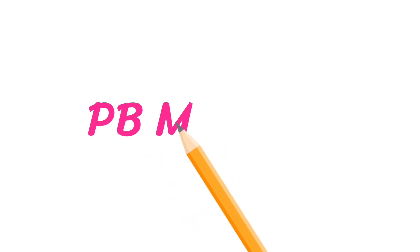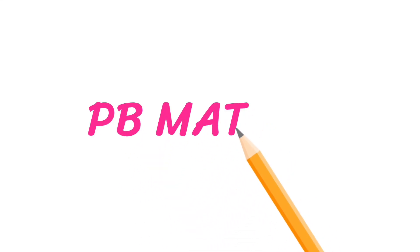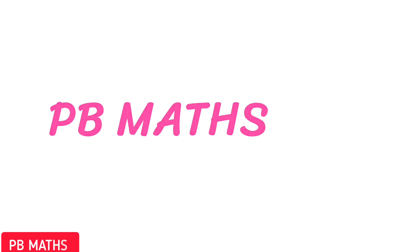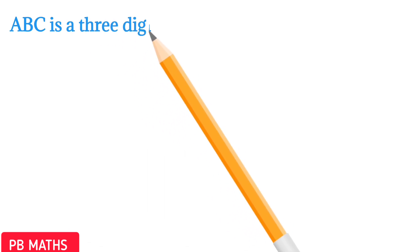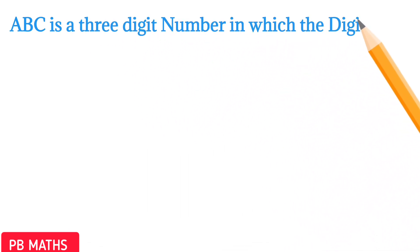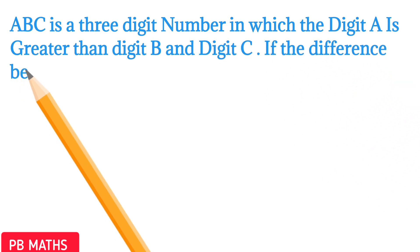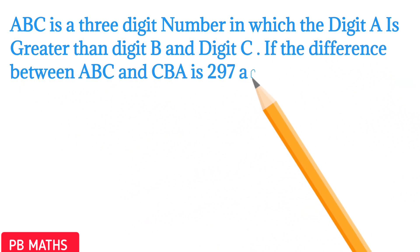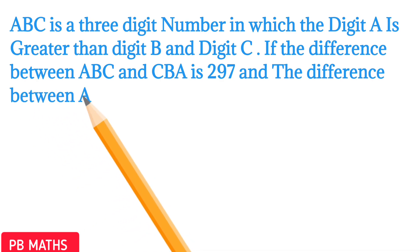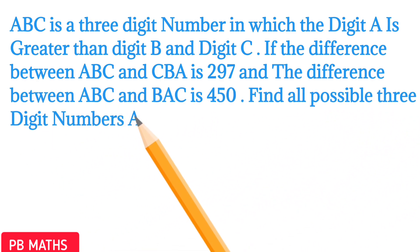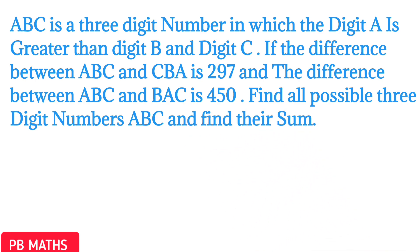Hello everyone, welcome to PV Maths. ABC is a 3-digit number in which the digit A is greater than digit B and digit C. If the difference between ABC and CBA is 297, and the difference between ABC and BAC is 450, then find all possible 3-digit numbers ABC and also find their sum.